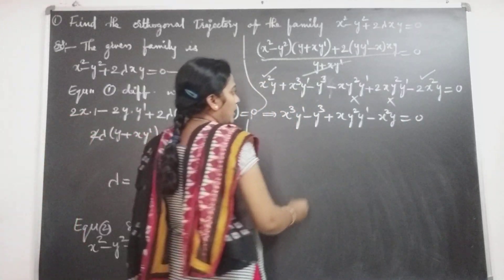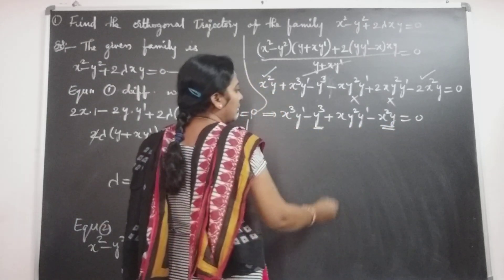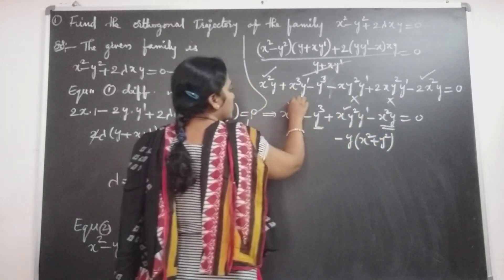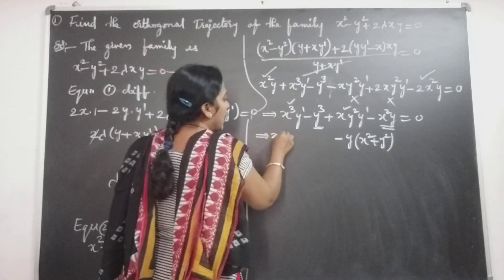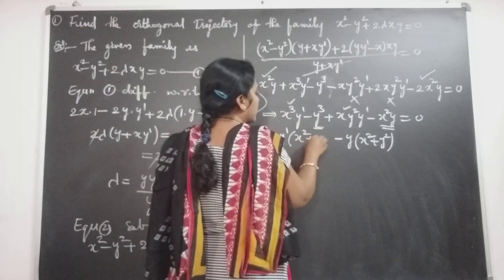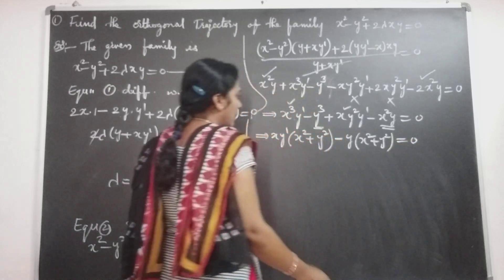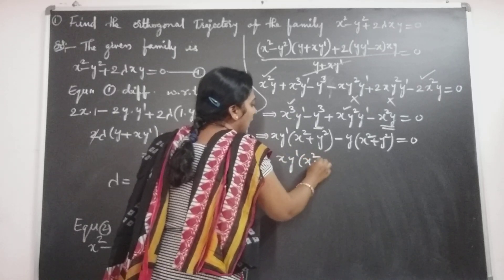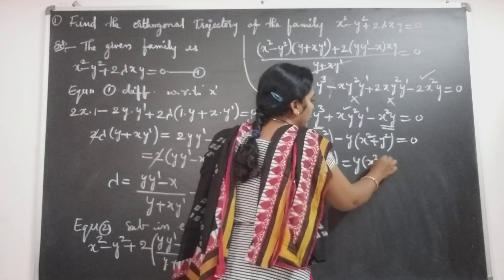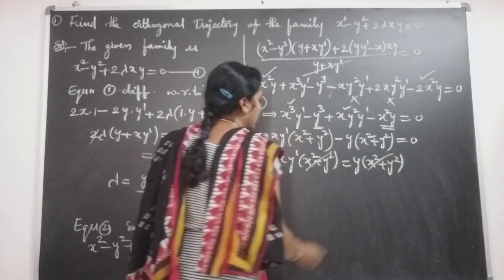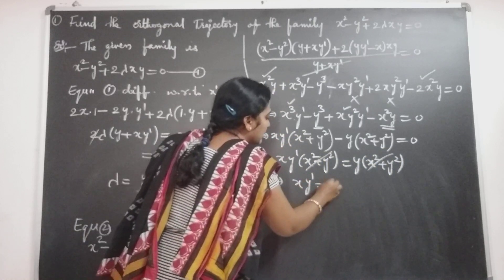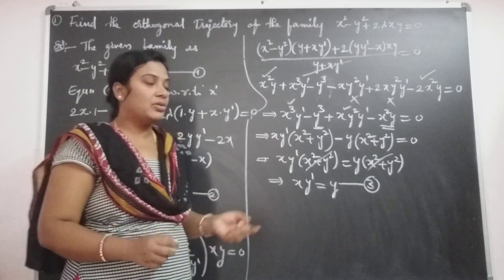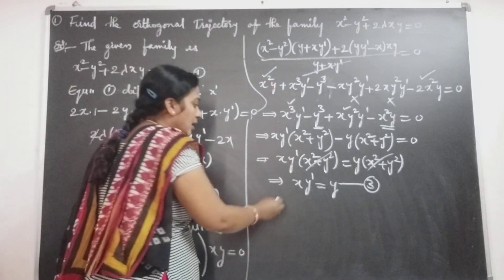So we have x³y' - y³ + xy²y' - x²y = 0. Taking common factor -y from the last two terms: -y(x² + y²). Taking common factor xy' from the first and third terms: xy'(x² + y²) = 0. So xy'(x² + y²) = y(x² + y²). The (x² + y²) terms cancel, giving xy' = y. This is equation 3, the differential equation of the given family.